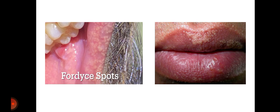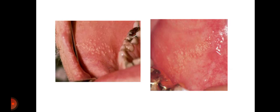Here you can see the clinical representation of Fordyce's spots. The first picture shows Fordyce's spots on the corner of the mouth, and the second shows Fordyce's spots on the lips. Here you can also see Fordyce's spots on the buccal mucosa opposite the molar teeth.